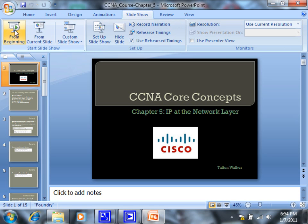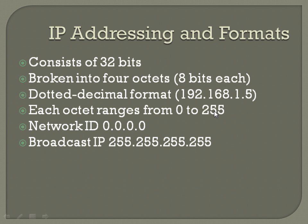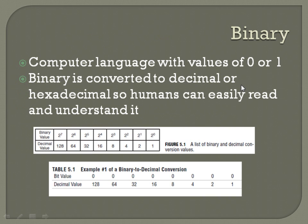Chapter five is IP at the network layer. The reason I want to get into this is because of binary. I'm not going to go real deep on all the individual slides, but as far as counting in binary, you're going to have to learn how to do it. Binary is a computer language with values of zero or one. A computer is made up of transistors — it's only got values of on or off. Binary is all about powers of two. Being able to count in powers of two, at least up to 256, is going to be key: 1, 2, 4, 8, 16, 32, 64, 128, 256.